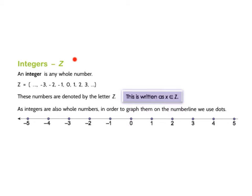The next one is Z, your integers. And your integers are any negative or positive whole number. And again, we can see it here. This is written as X is an element of Z, the integers. And as integers are also whole numbers, in order to graph them on the number line, we use dots as well.